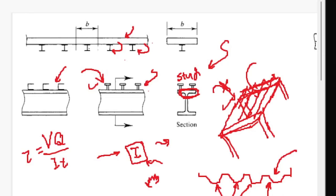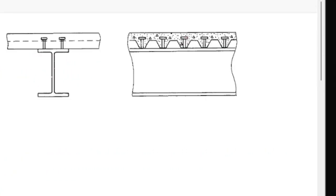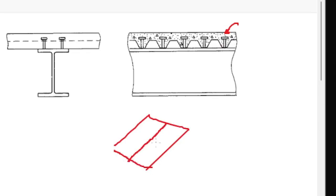If you are using ribbed slabs, you need to notice that the direction of the rib is important. Usually the ribs are perpendicular to the carrying beam. If you have a slab with beams spanning in one direction, you want to span your ribs perpendicular to those beams so that the load is being carried by the beams. The usual configuration is ribs perpendicular to the carrying beam.